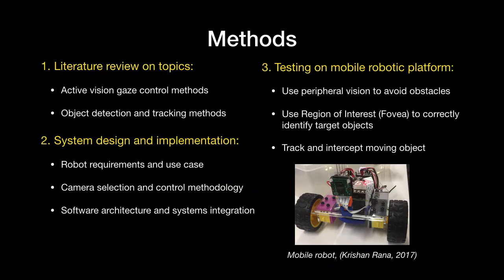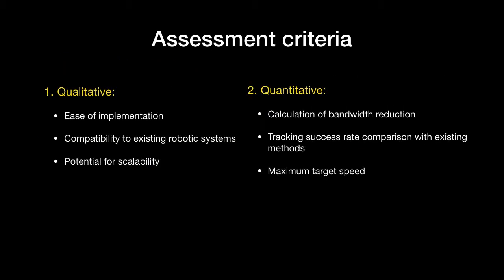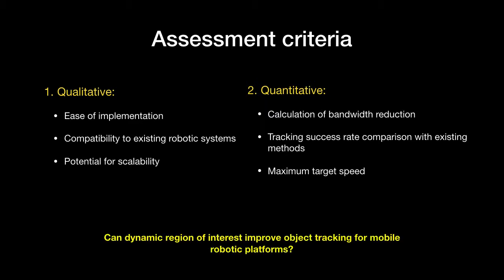The project will begin with a literature review, which will inform the design process. Implementation will be attempted using an existing robotic platform, and the performance of the peripheral and foveal vision will be measured by various practical tests. Project success will be measured by qualitative and quantitative metrics designed to answer the research question: can dynamic region of interest improve object tracking for mobile robotic platforms?